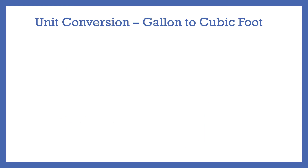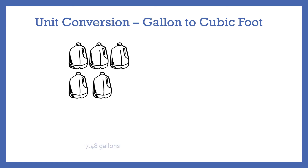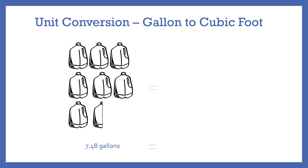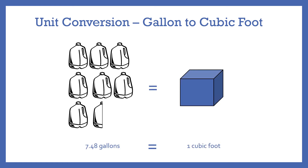From a volumetric standpoint, there are 7.48 gallons in every cubic foot. So if you have a bucket that is exactly one cubic foot in volume, you could pour 7.48 gallons of water into that bucket to exactly fill it up.